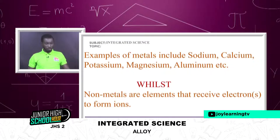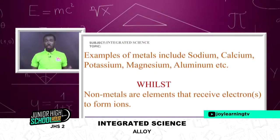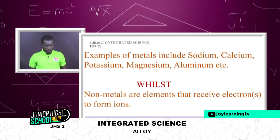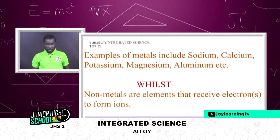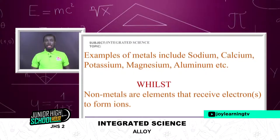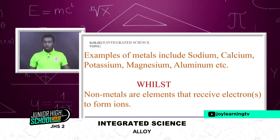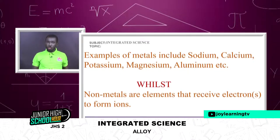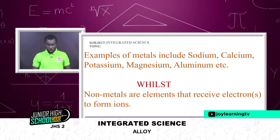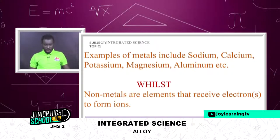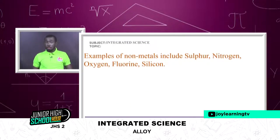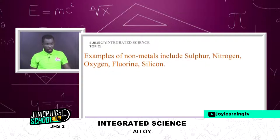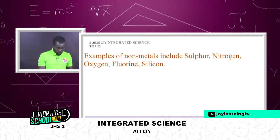Now let's see what a non-metal is. Non-metals are elements that receive or gain electrons to form ions. You should always have in mind that metals give out electrons to form ions, while non-metals receive or gain electrons. Examples of non-metals include sulfur, nitrogen, oxygen, fluorine, and silicon.